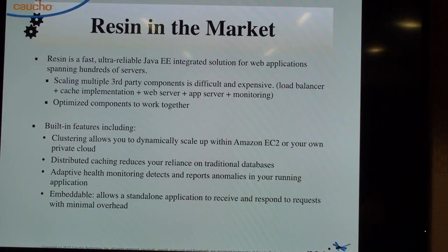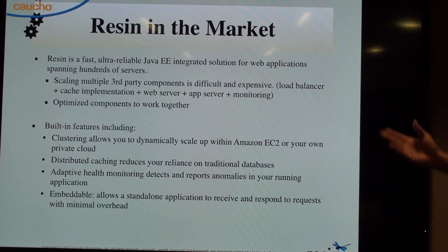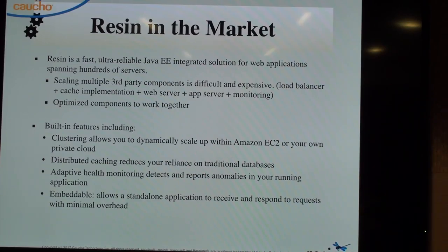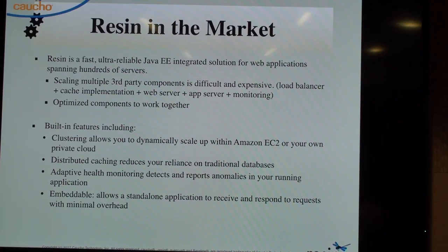Looking at Resin in the market: it's a fast, ultra-reliable Java EE integrated solution. Scaling multiple third-party components can be difficult and expensive. We have built-in features — and these are default features in Resin. We have clustering that lets you scale up or down to match load, whether in a private cloud, hybrid cloud, or Amazon EC2. We have distributed caching to reduce reliance on traditional databases and reduce bottlenecks. We have adaptive health monitoring, and Resin is embeddable.